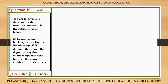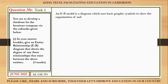The first part says to develop a database for the furniture company. Roman one: give an entity relationship diagram that shows the degree of any tree relationship that exists between the above entities. Before going to the diagram, let's explain what an entity relationship diagram is. An ERD is a diagram which uses graphic symbols to show the organization of and relationship between data in a database. It is always advisable to draw your entity relationship model before designing it on your machine, as it gives a physical representation of your database.